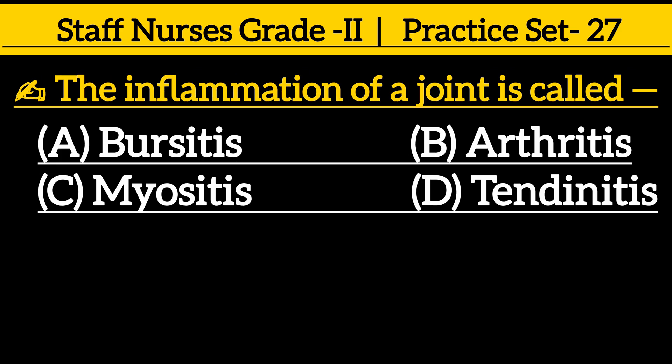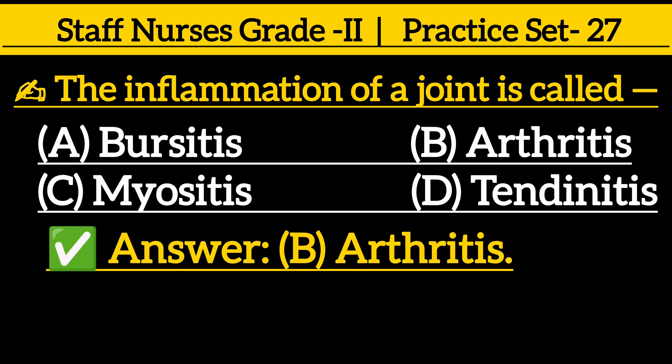Next one: the inflammation of a joint is called — option A: Bursitis, option B: Arthritis, option C: Myositis, option D: Tendonitis. Correct answer is option B: Arthritis.